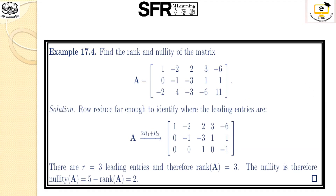Let's see some examples using these concepts. In this problem, the rank-nullity concept is used to find the rank of a matrix. The matrix A is given with 5 columns and 3 rows. By reducing the given matrix using row operations, we obtain an upper triangular matrix with principal diagonal entries 1, −1, 1. The rank is 3. Since the dimension of the given matrix is 5, we find nullity T using the theorem: dimension of V minus rank equals 5 minus 3, which equals 2.